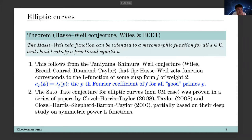If you put another factor coming from bad primes, you can define a Hasse-Weil zeta function for the curve. It was conjectured that this zeta function admits a meromorphic continuation to the whole complex plane and also satisfies a functional equation. Now this is not a conjecture — it's a theorem, thanks to the Taniyama-Shimura-Weil conjecture, on the modularity of elliptic curves.